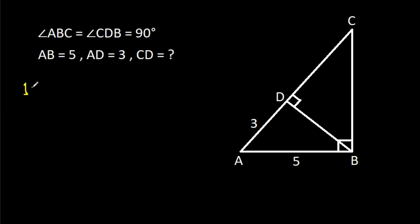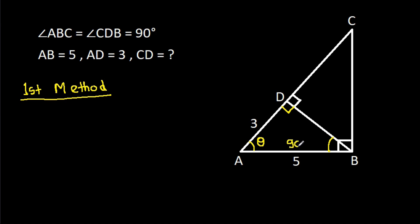So, the first method. Suppose this angle is theta. Then this angle is 90 degrees, so this angle will be 90 degrees minus theta. So this angle will be theta, and this angle is 90 degrees, so this angle will be 90 degrees minus theta.